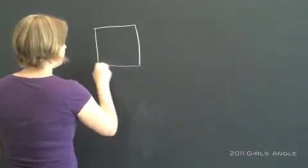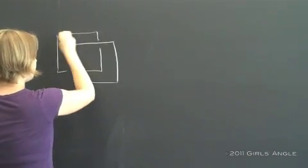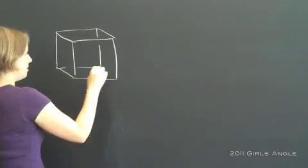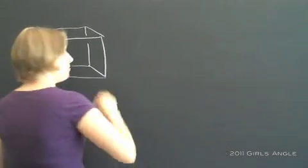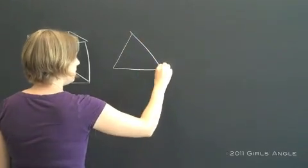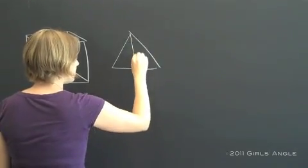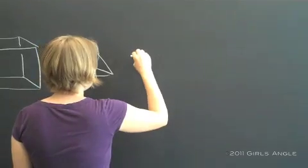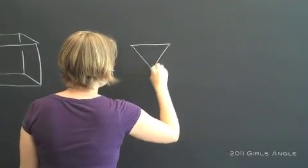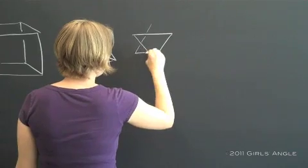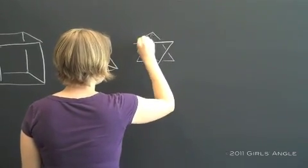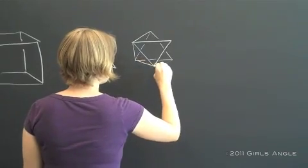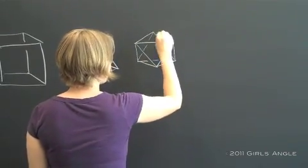So what are the platonic solids? There are some familiar ones in here, like the cube, and probably you've also heard of the tetrahedron, which is like a pyramid but it has a triangular base, and its friend the octahedron, which is built out of six triangles.